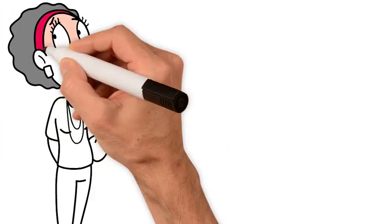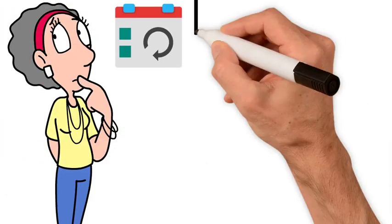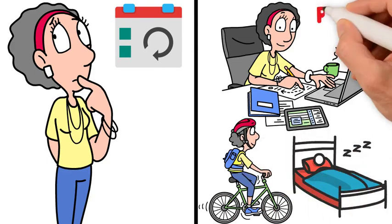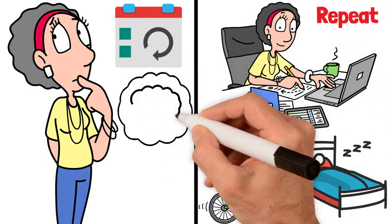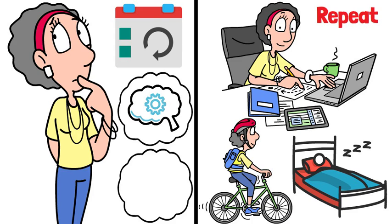But as we grow older, our days become repetitive. We go to work, come home, sleep, and repeat. The brain processes fewer new experiences, and time seems to fly by.